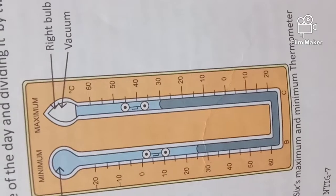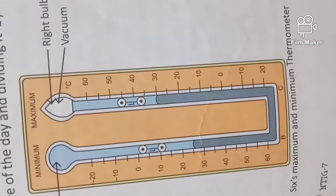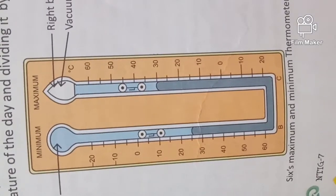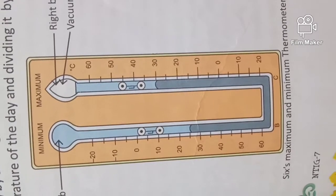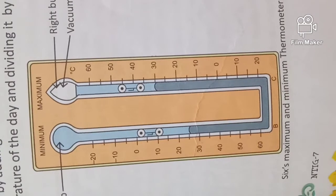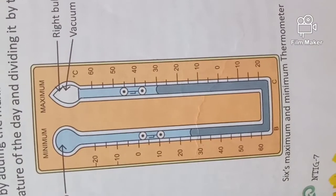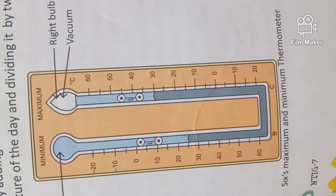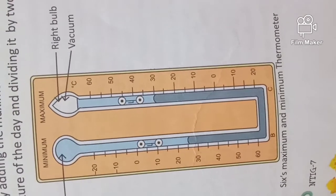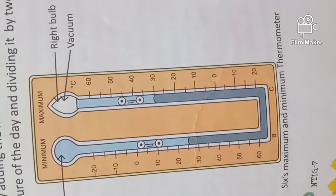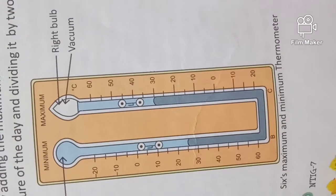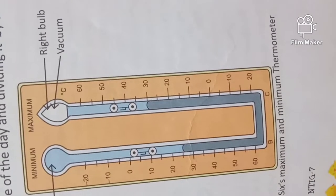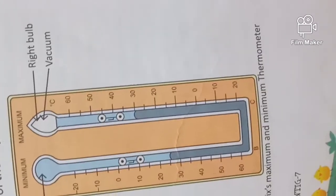To find out the maximum and minimum temperature of the day, a special instrument called the Six's Maximum and Minimum Thermometer is used. The difference between the maximum and minimum temperature of the day is called the diurnal range of temperature. The difference between the maximum and minimum temperatures recorded during a year is known as the annual range of temperature. We can find the average temperature of the day by adding the maximum and minimum temperature and dividing by two.